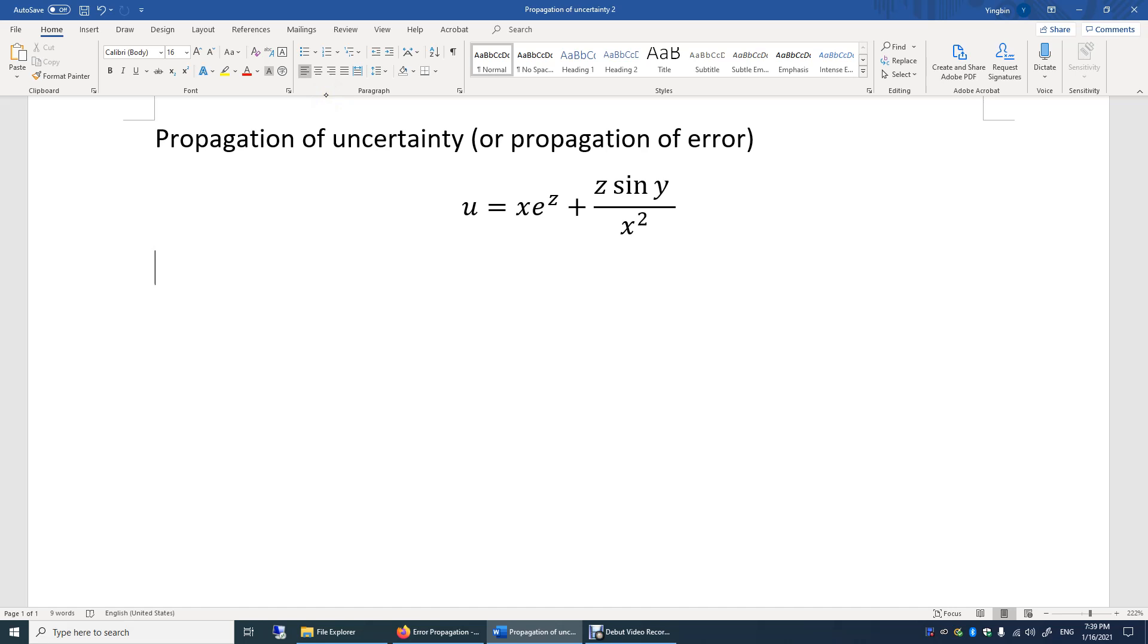Assuming we know the average values of x, y, and z, and the uncertainty of x, y, and z, we'll be able to determine the uncertainty of u.